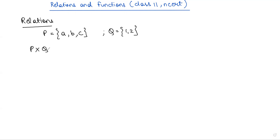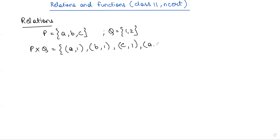We started with the Cartesian product. B cross Q is the set of all ordered pairs from B to Q. P cross Q contains six elements, since there are three elements in P and two elements in Q. A relation from P to Q is defined as a subset of this Cartesian product of P and Q.